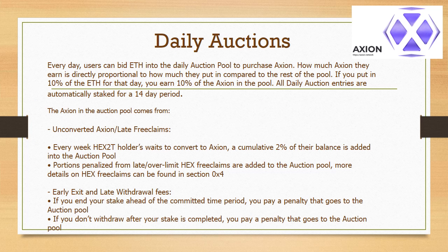The daily auction — putting tokens and value into your pocket. To get Axion, it needs to be claimed by Hex2T holders. The longer they wait to claim, the more penalties they face — about 2% of their total per week. This 2% is added into a daily auction pool where people can bid using ETH on the Axion tokens within it. If you bid 10% of the ETH on that day, you get 10% of the pool rewards.